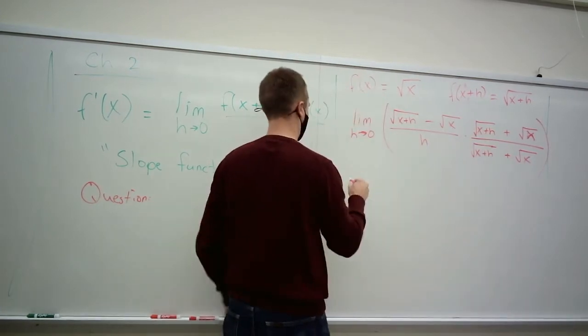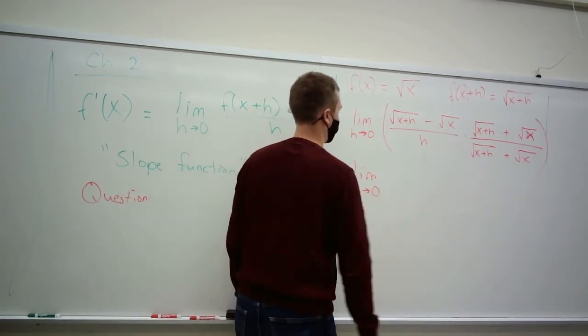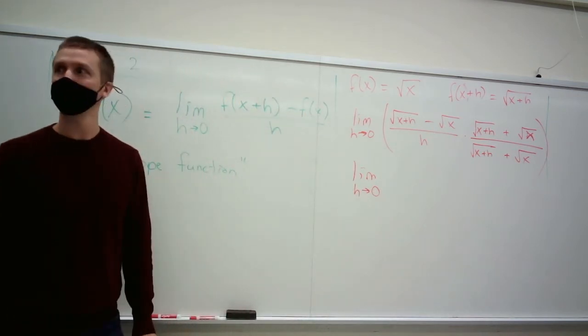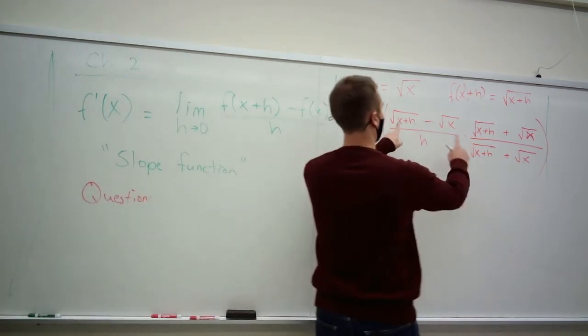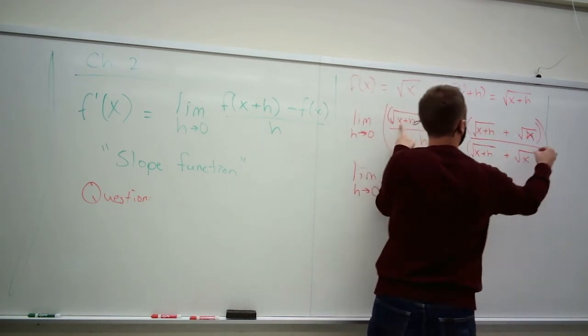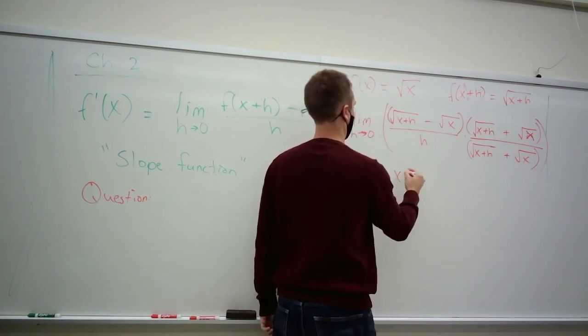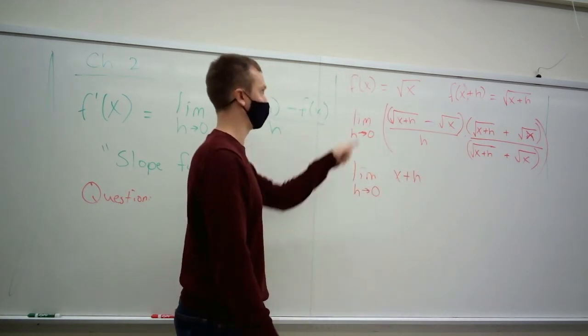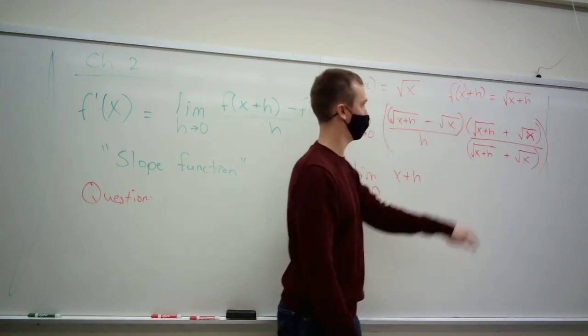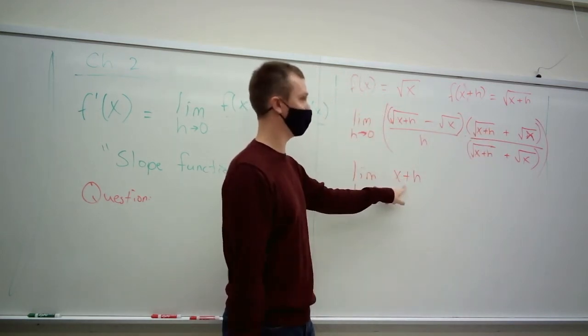Why is this so cool? Well, this is so cool because conjugates, when multiplied together, result in perfect squares. When you distribute this, you get this times this, right? It's the square root of x plus h times the square root of x plus h. Together, that's the square root of x plus h squared. The square root undoes the square root.